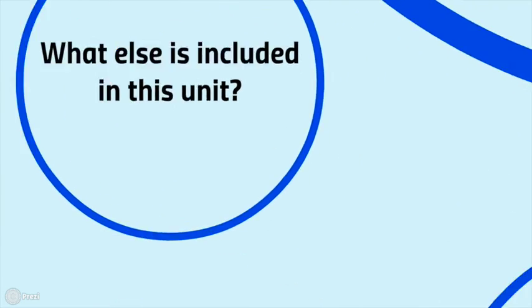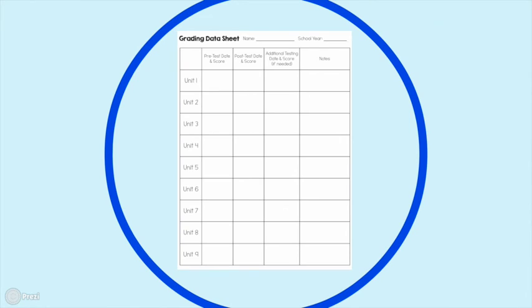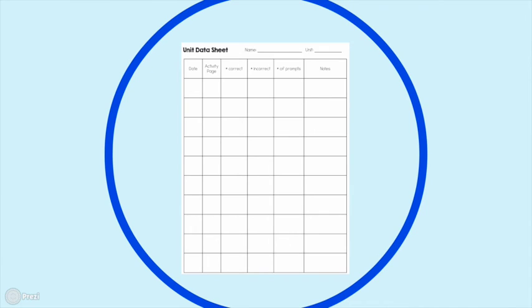So what else is included in this unit? We also have a unit grading data sheet. This is going to really guide the progress of the curriculum. You'll put in your pre-test and your post-test score and get to show all of that great growth throughout the year. This will be the data sheet that guides your instruction each day. So for each unit, you'll use one of these data sheets, put down the date, the activity page, and you can track how many correct, incorrect, or how many prompts they needed.